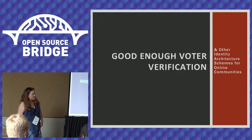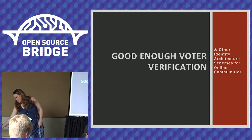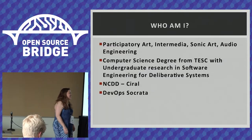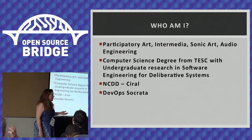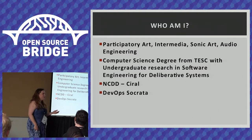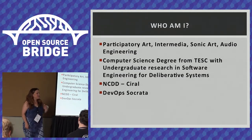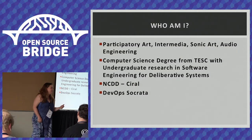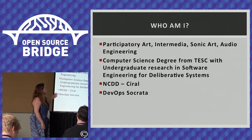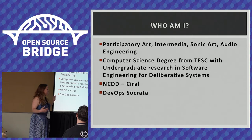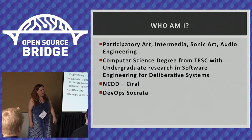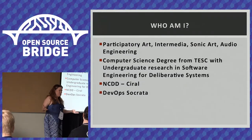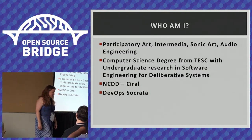I'm going to talk about who I am. This is the second time I've spoken at Open Source Bridge — it's a follow-up to a talk I did two years ago. I had just finished my computer science degree and did undergraduate research in electronic democracy. My original background was as an artist; I worked in multimedia, participatory art, sonic art, and audio engineering. Then I got a computer science degree from the Evergreen State College.